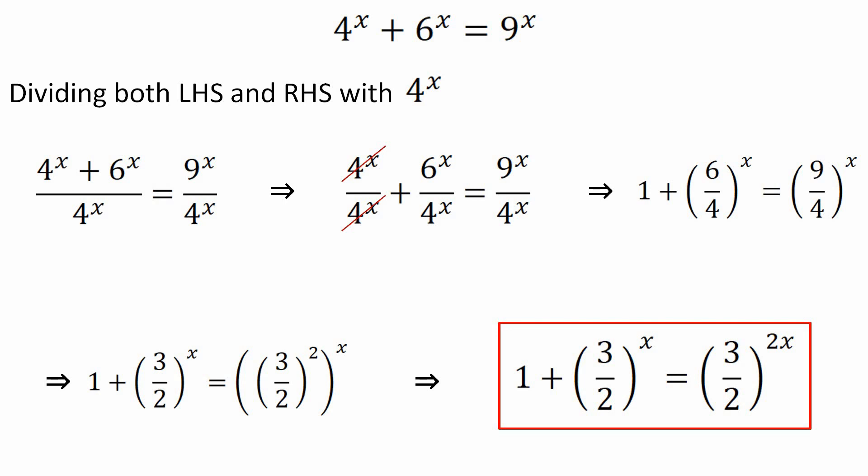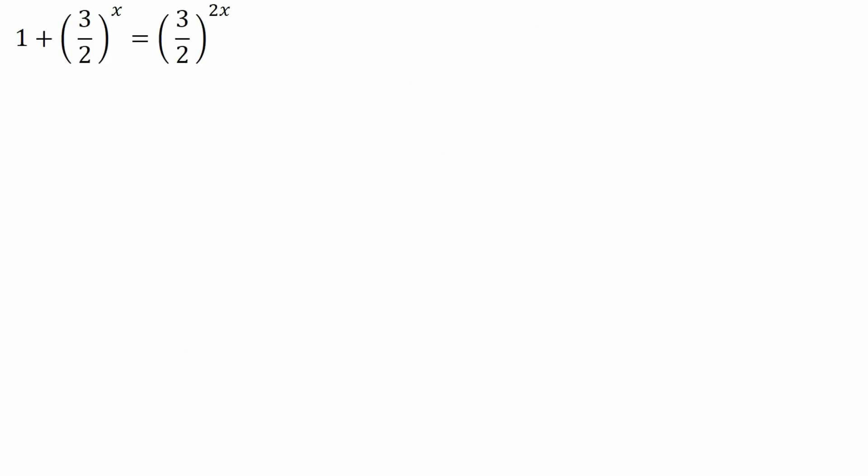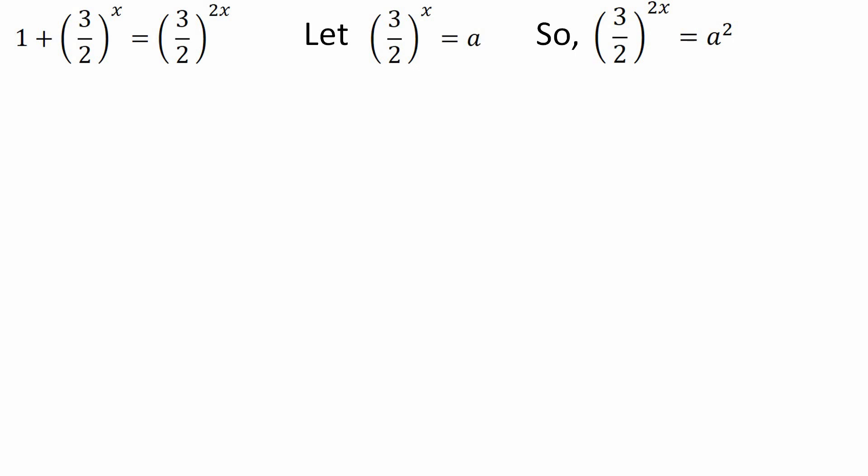We have converted our original expression into this form. Now we will solve it to find the value of x using the quadratic equation method. We assume that (3/2)^x = a, so (3/2)^2x becomes a². Substituting into the equation, we get 1 + a = a², which gives the quadratic equation a² − a − 1 = 0.